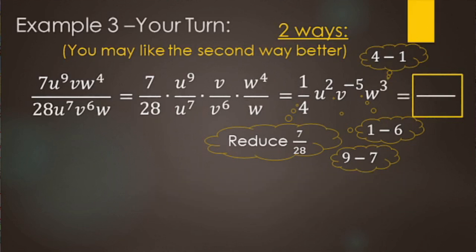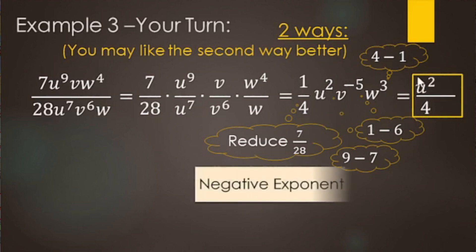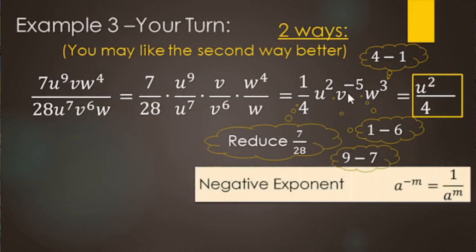Cleaning up: for some teachers this might be acceptable, but if all positive exponents are required, we have more work. The 4 goes in the denominator. W squared stays in the numerator. Using the negative exponent rule, V to the negative fifth goes to the denominator as V to the positive fifth. W to the third power stays in the numerator.